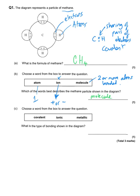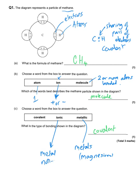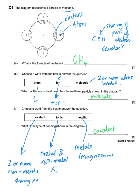Choose a word from the box: what type of bonding is shown in the diagram? The answer is covalent. Metallic bonding is the bonding found in metals — for example, the bonding in magnesium would be metallic. Ionic is where you've got a metal bonded to a non-metal, and carbon and hydrogen are both non-metals, so it can't be ionic. That's what we've got for covalent: two or more non-metals bonded together. Also, there's the clue about sharing pairs of electrons — that's a double reason why the answer is covalent.